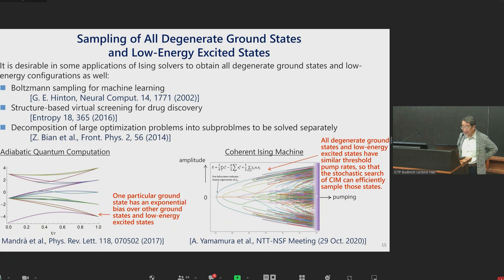On the other hand, coherent Ising machine, the oscillation property as a function of external pumping into OPA, OPO, is shown on the right panel. The first bifurcation happens at maximum eigenstate of Jij matrix. This is not the ground state. The ground state actually appears at very later pumping. But all those ground state and low energy excited state have more or less similar threshold pumping, gain threshold, so that the stochastic nature of the search process of CIM can actually sample those good solutions with fairly equal probability.